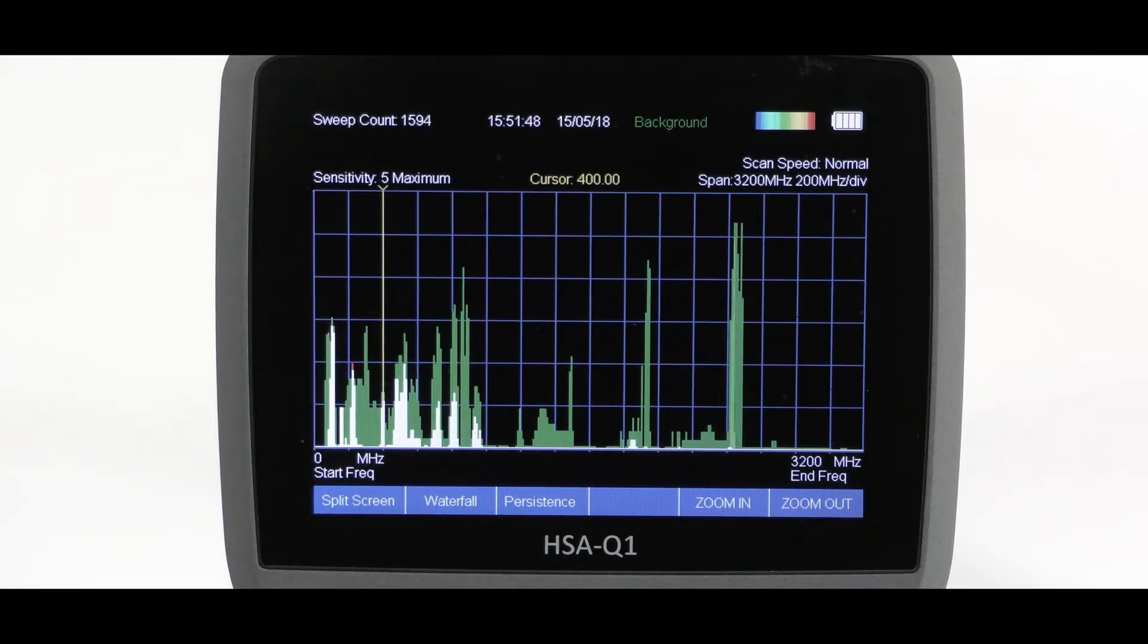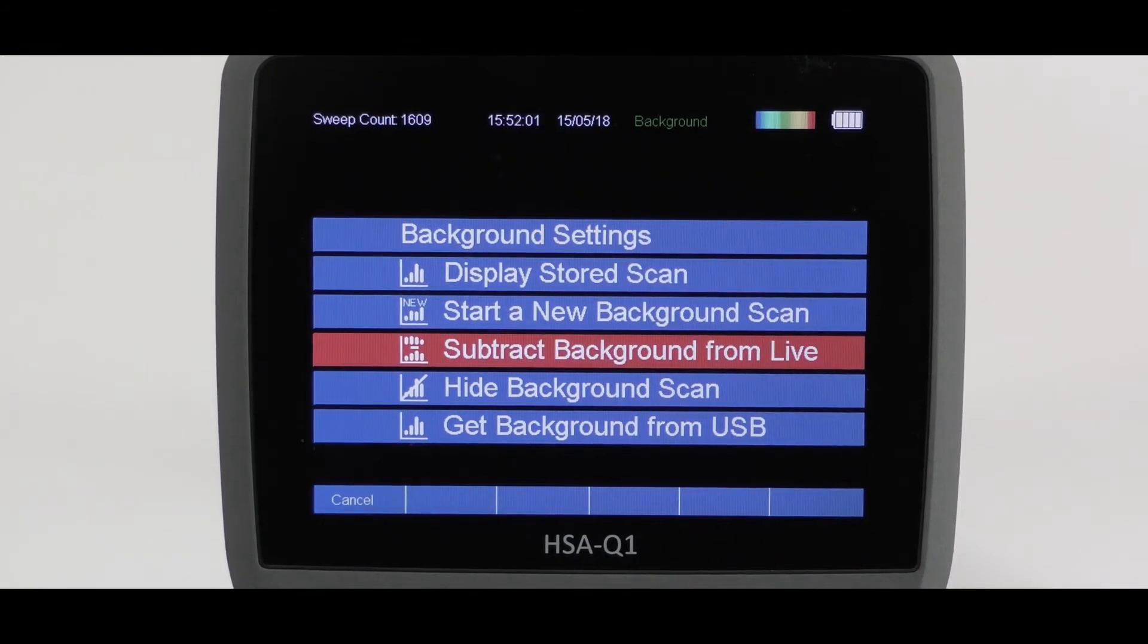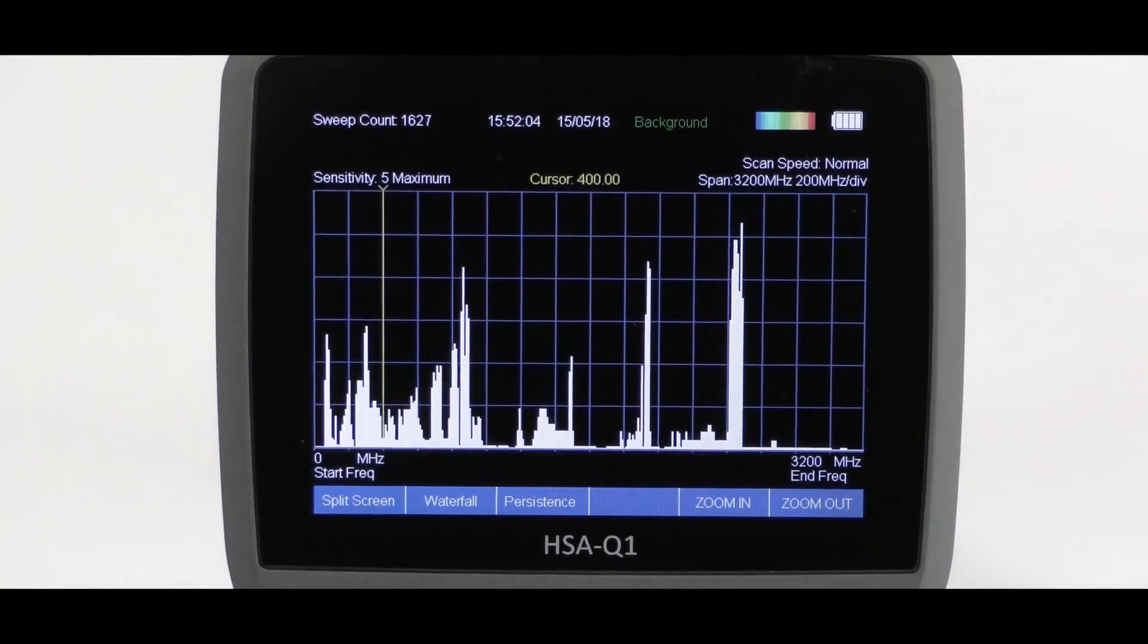This can then be used to compare target area live signal with a known friendly RF signature. This can be displayed concurrently or subtracted live from the scan. New signals, although specific to the target area, then can be easily and quickly identified.